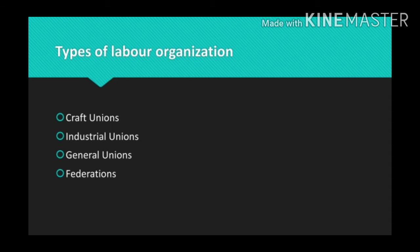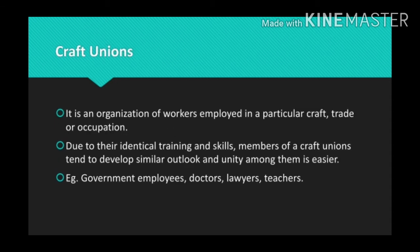The first type is the craft union. A craft union is an organization of workers employed in a particular craft, trade, or occupation. Due to identical training and skill, members of a craft union tend to develop similar outlook, and unity among them is easier. Members are generally craft conscious rather than class conscious. A craft union has strong bargaining power because its workers possess specialized skills which cannot be easily replaced in a strike.